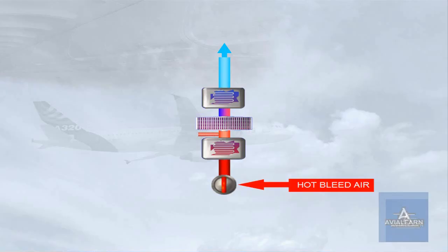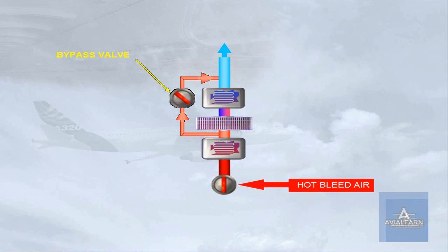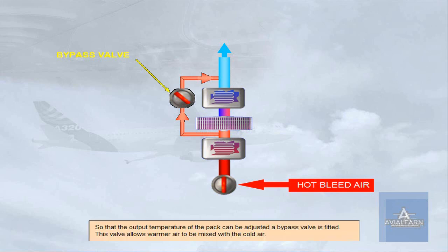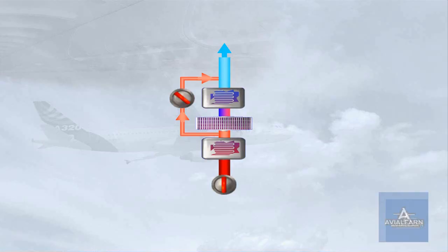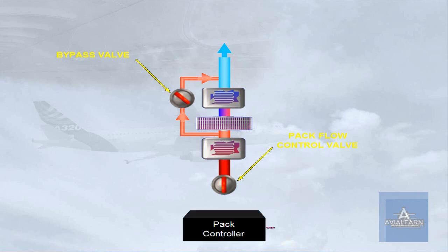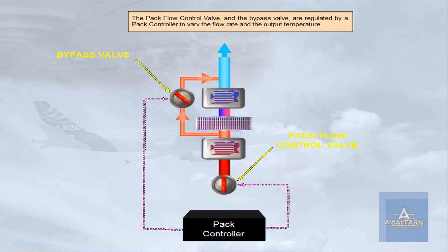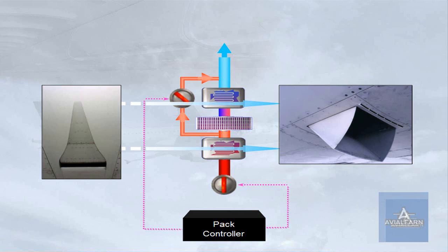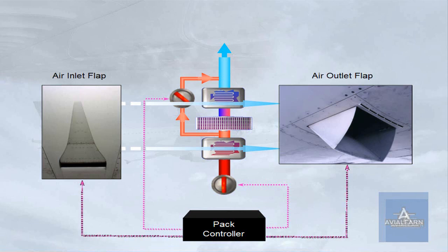So that the output temperature of the pack can be adjusted, a bypass valve is fitted. This valve allows warmer air to be mixed with the cold air. The pack flow control valve and the bypass valve are regulated by a pack controller to vary the flow rate and the output temperature. The pack controller also controls the ram air inlet and outlet flaps to adjust the amount of air blowing through the heat exchangers.